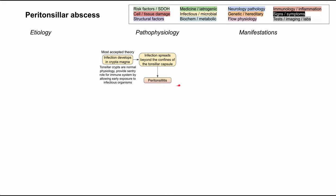When you have inflammation in the peritonsillar space, white blood cells respond. They come in, try to contain the inflammation and infection, and essentially nearby tissue dies. When that nearby tissue dies, it creates a hole that can then fill with the pathogen, the bacteria, and/or pus — the remnants of the white blood cells that came in to respond to that inflammation. That hole filled with pathogen and pus forms the abscess.